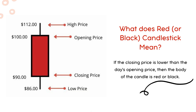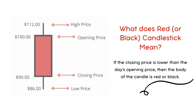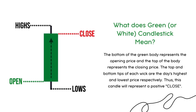The color of the candlestick tells us whether that candle was formed by a positive or negative trading day. If the closing price is lower than the day's opening price, then the body of the candle is red or black. The white or green candle, also known as the open candlestick, shows the price has moved up. Candlesticks will have a body and usually two wicks at each end. The bottom of the green body represents the opening price and the top of the body represents the closing price. The top and bottom tips of each wick are the day's highest and lowest price, respectively. Thus, this candle represents a positive close.